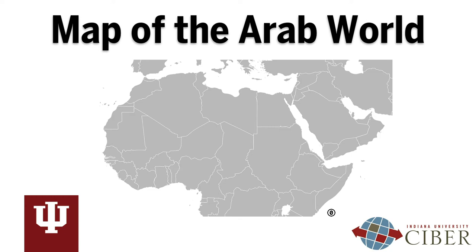Arabic is the official language of 22 countries that make up the Arab League. It is important to distinguish between the Arab world and the Middle East. Although they are similar, the Middle East is a geographic region in Southeast Asia and North Africa and includes Turkey, Israel, and Iran, which are not Arab countries. The Arab world is the following list of countries that are members of the Arab League.